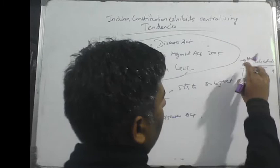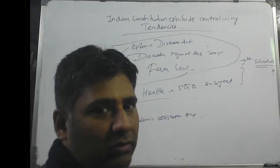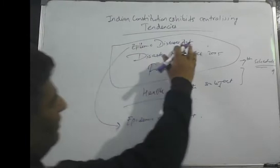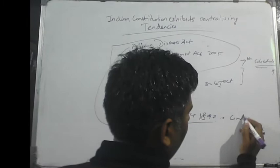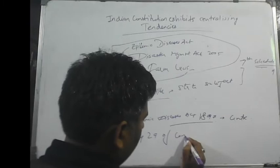The 7th Schedule mentions the various lists by using which the Union and states implement and enact laws. Both Union and states can enact laws on subjects in the Concurrent List. Now, despite health being a state subject, the Epidemic Diseases Act 1897 has been passed by the center. The center has used Entry 29 of the Concurrent List to do so.